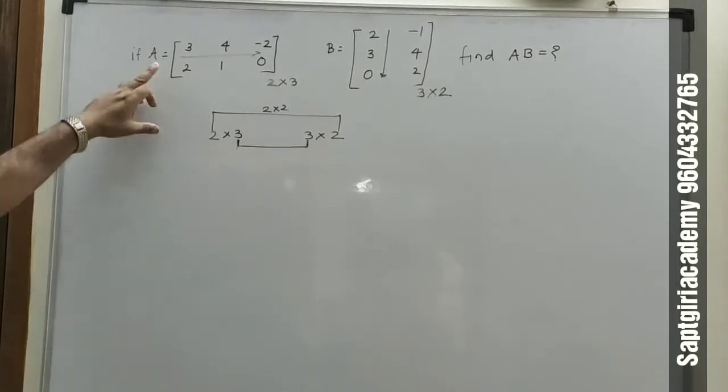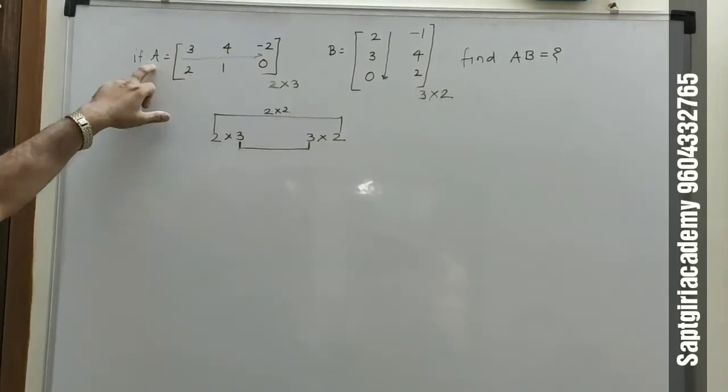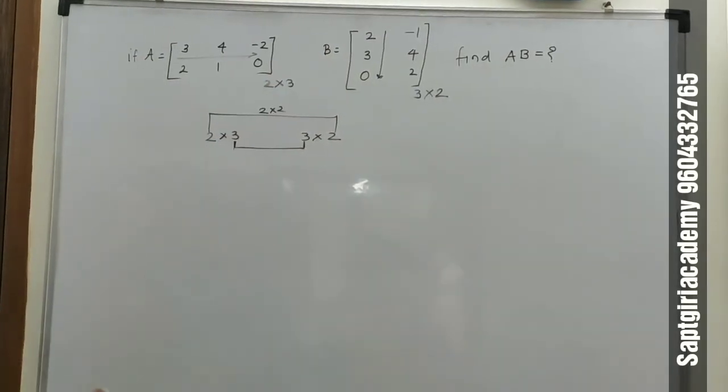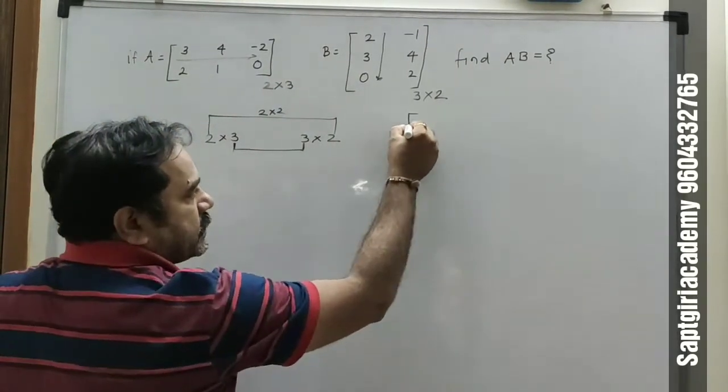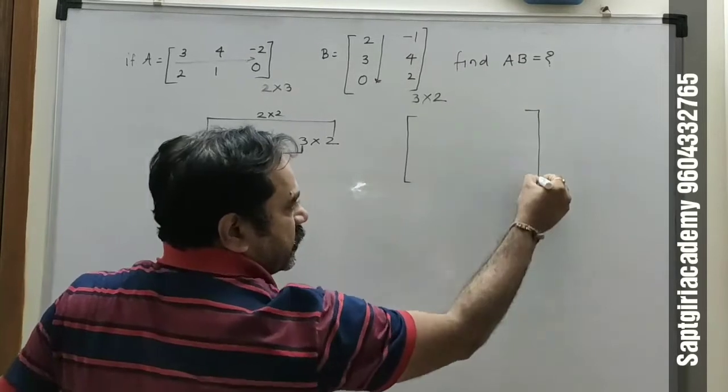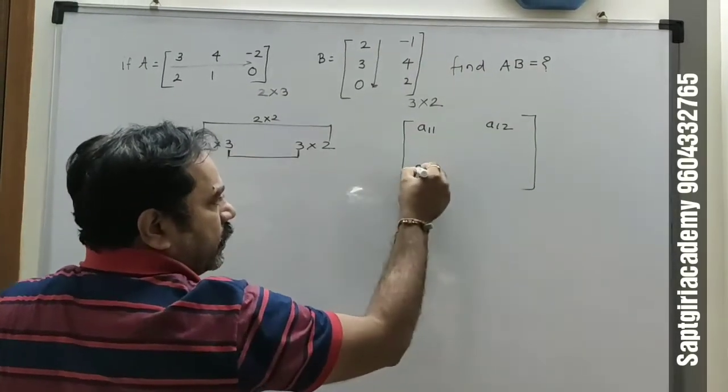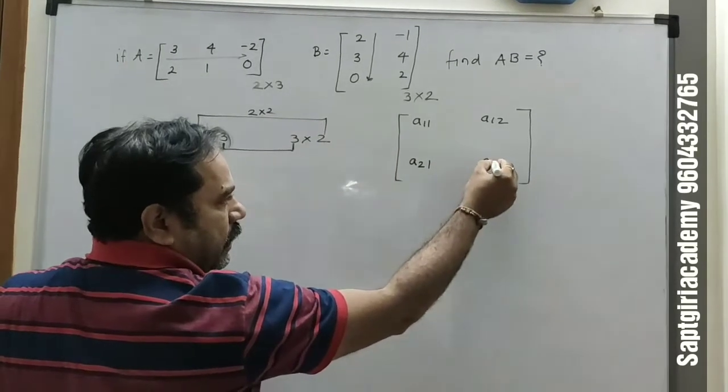We will take the row of first matrix and column of second matrix. Matrix elements are in fixed position: A11, A12, A21, A22.